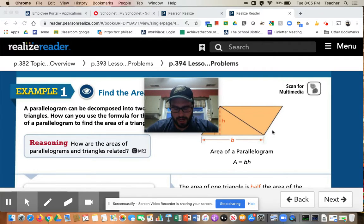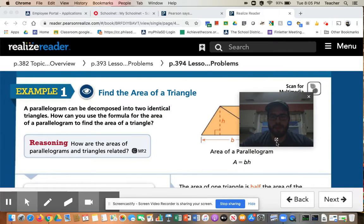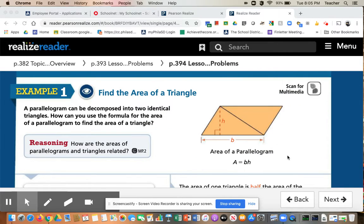And I think you guys are going to like this one because it's super easy. So here's what we're going to do. First thing I'm going to do is I'm going to put my ugly face away. And what I'm going to do is I want you to look at right here. Now, it says here a parallelogram can be decomposed into two identical triangles. How can you use the formula for the area of a parallelogram to find the area of a triangle.